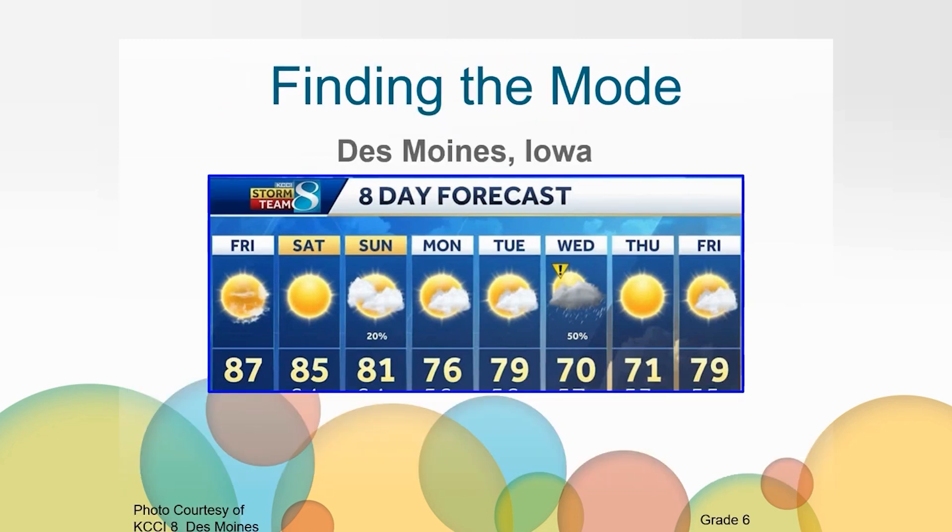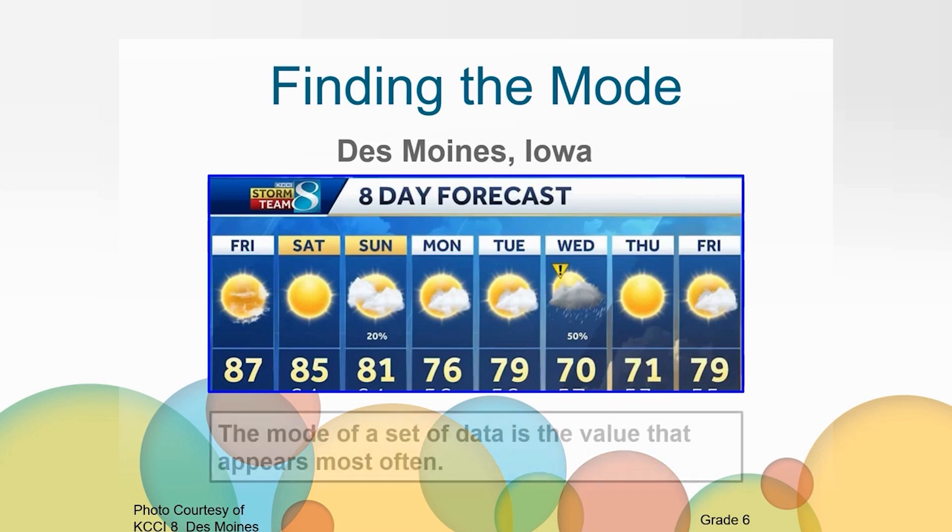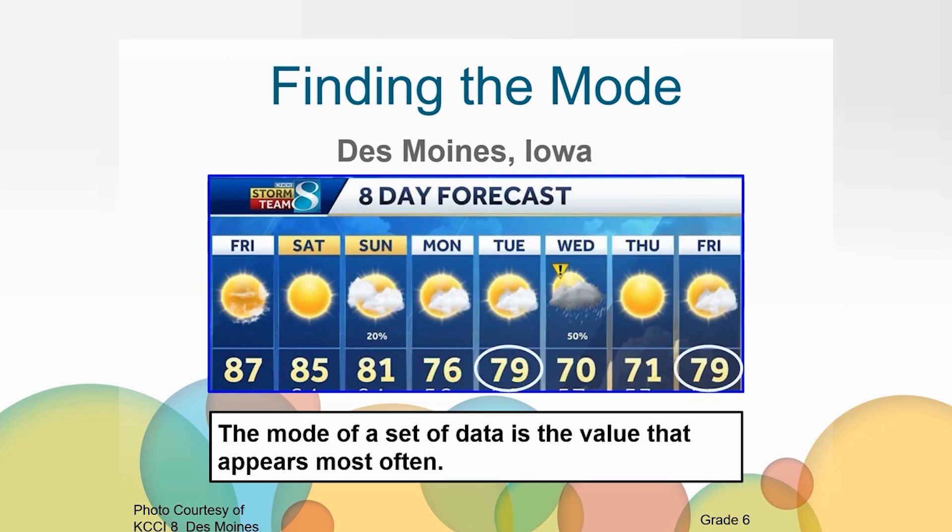This weather report is for Des Moines, Iowa. Remember when we discussed that the temperature was the same on Tuesday and Friday? We call this the mode. The mode is the value that appears most often. Our data set is the anticipated temperature for each day. Weather forecasters expect that it will be 79 degrees on Tuesday and on Friday. 79 is the mode for this set of data.